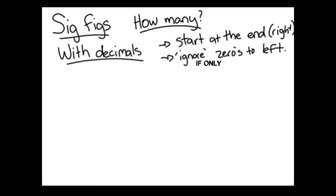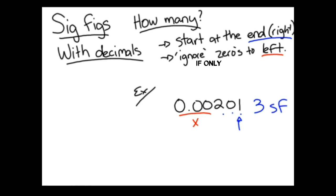Note that sig figs are not the same as decimal places. Using an example, 0.00201, you begin at the end with the 1. You then go towards the left, and stop at the 2, since everything after that is a 0. Therefore, you have 3 sig figs.